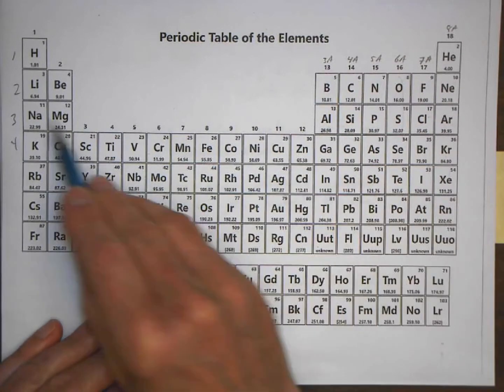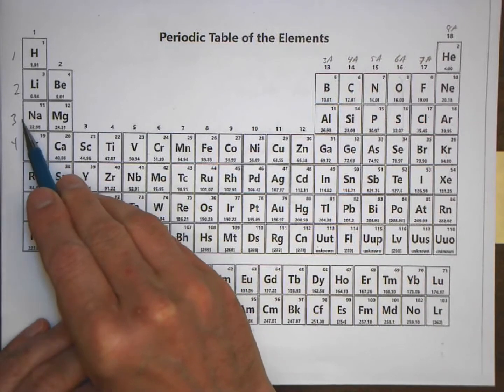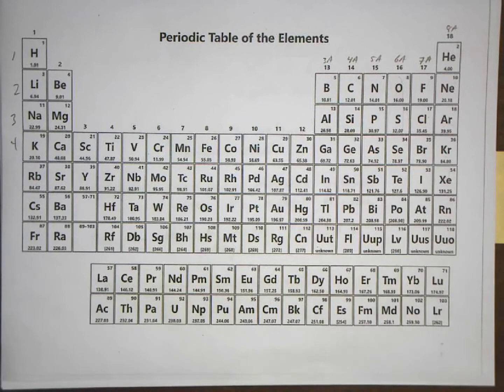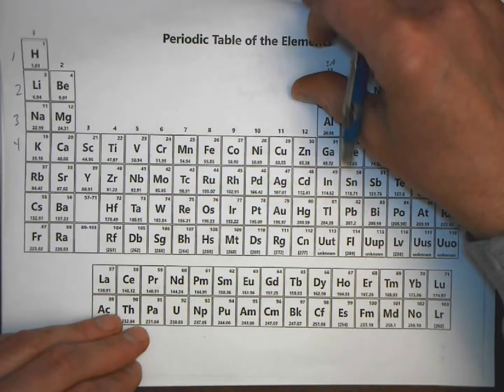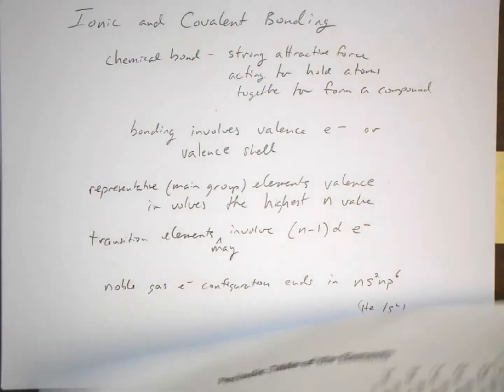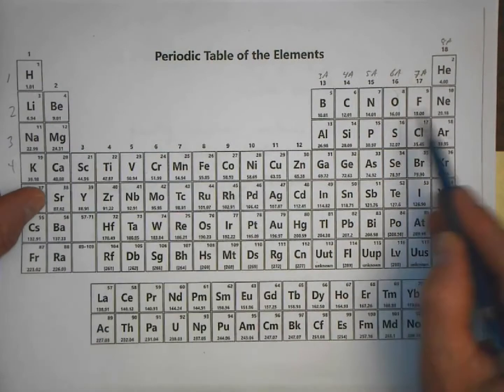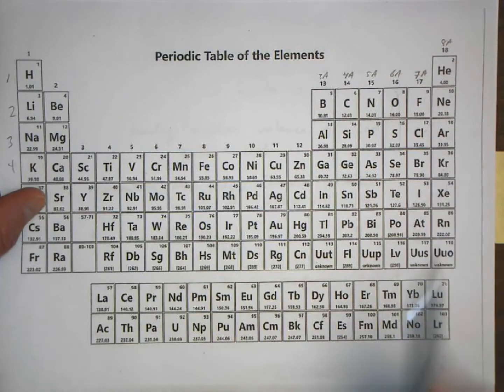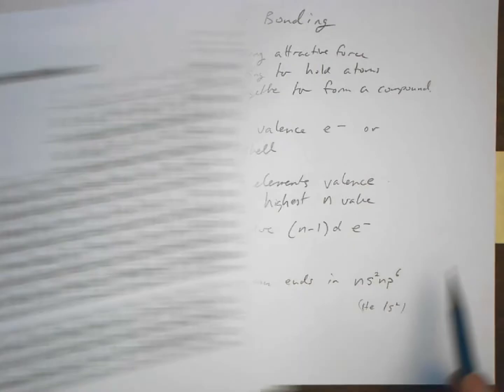The s electrons are filled and the p electrons are filled. So you have this electron configuration that looks like ns2 and p6, whether the n is 2 or 3. If it's 2, we're talking about neon. If it's 3, we're talking about argon. If it's 4, we're talking about krypton, and so on. 5 would be xenon.